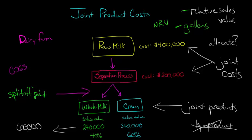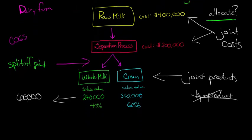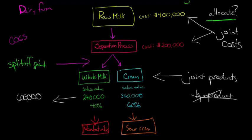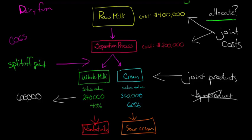All the costs before the split-off point — the joint costs — can sometimes lead us to make bad decisions if we allocate them to the products. There's a decision-making process called 'sell or process further.' For example, we might be able to turn whole milk into nonfat milk, or turn cream into sour cream or butter. We'd then look at the incremental cost — say $40,000 — and compare it to the new sales value, doing a cost-benefit analysis.